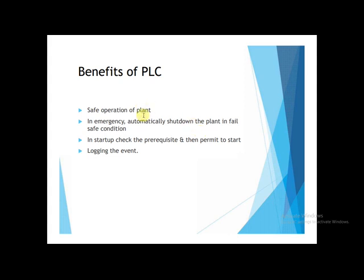Now, what are the benefits of the PLC? Number one is the safe operation of a plant. The plant can be operated safely because there are very minimal chances of error — the logic is defined, we get accurate output. PLC can also be used for safety systems like shutdown systems, where we define shutdown levels on various sensors and when that value is reached, the plant automatically shuts down. A human can ignore such signals, but a computer cannot.